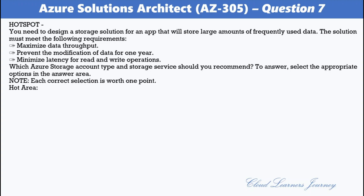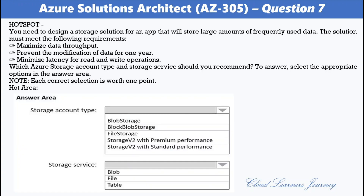Select the appropriate options in the answer area. For storage account type, options are: blob storage, block blob storage, file storage, storage V2 with premium performance, and storage V2 with standard performance. For storage service, options are: blob, file, and table. The correct answer for storage account type is block blob storage, and for storage service it is blob. Block blob is a premium storage account type for block blobs and append blobs, recommended for high transaction rates, smaller objects, or consistently low storage latency.